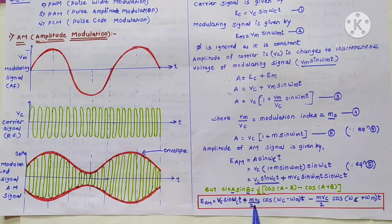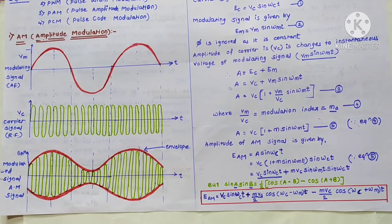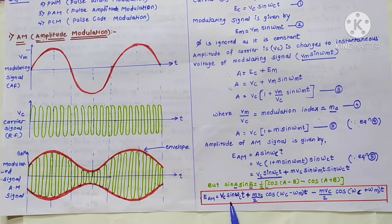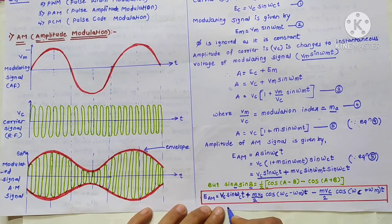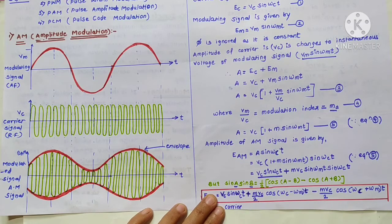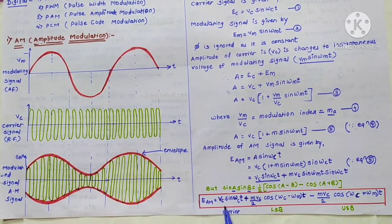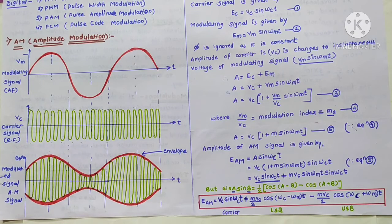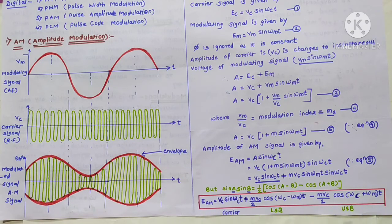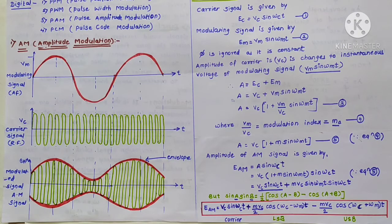The amplitude-modulated signal consists of the carrier signal, the lower sideband (LSB) having frequency ωC − ωM, and the upper sideband (USB) having frequency ωC + ωM. Today we have derived the mathematical equation for the amplitude-modulated signal, and by using this equation we can implement the amplitude-modulated spectrum.